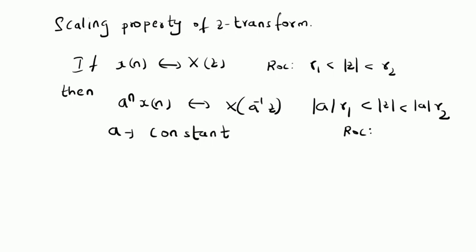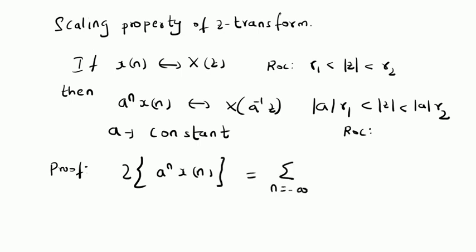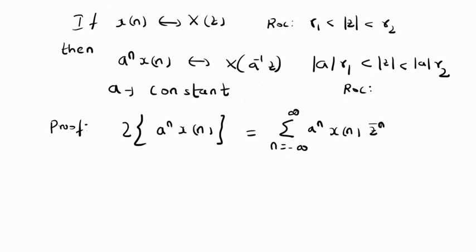Now let us look at the proof for this property. The Z-transform of a^n x of n is given by the summation based on the definition: summation n equals minus infinity to plus infinity of a^n times x of n times z to the power minus n. By simply grouping a and z, we get summation n equals minus infinity to plus infinity of x of n...